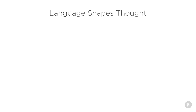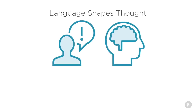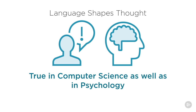Our language has been shaped by our thought and our thoughts in turn are shaped by our language. This is as true in computer science as in psychology, and this is in a nutshell the whole reason for the existence of Scala. Scala is specifically designed to be a language that runs atop the JVM — which can interoperate with Java — but also supports both functional and object-oriented programming.